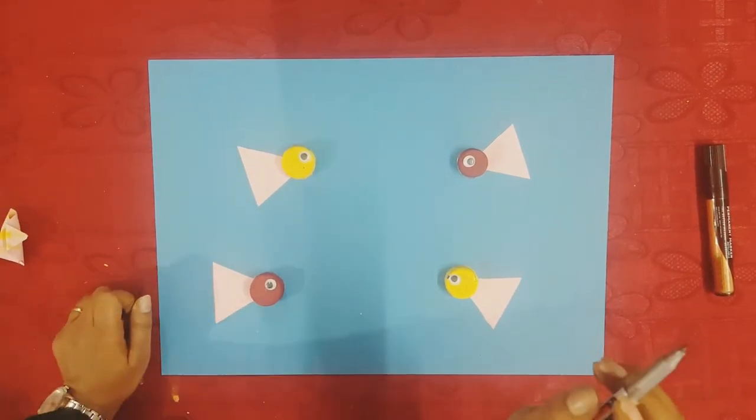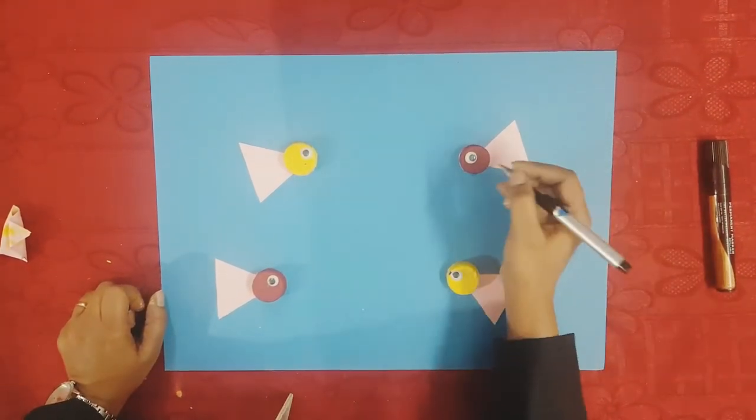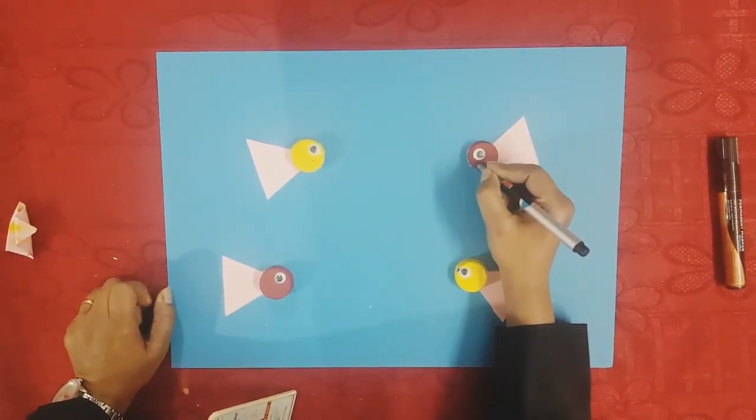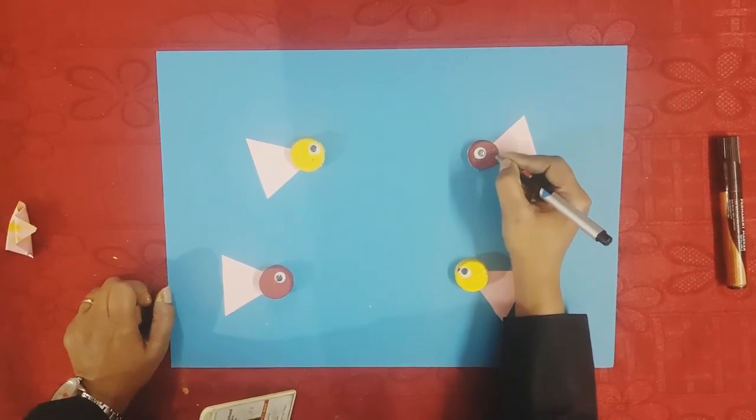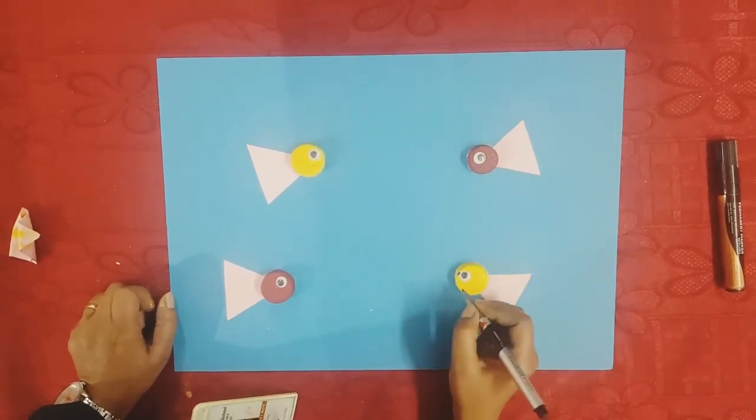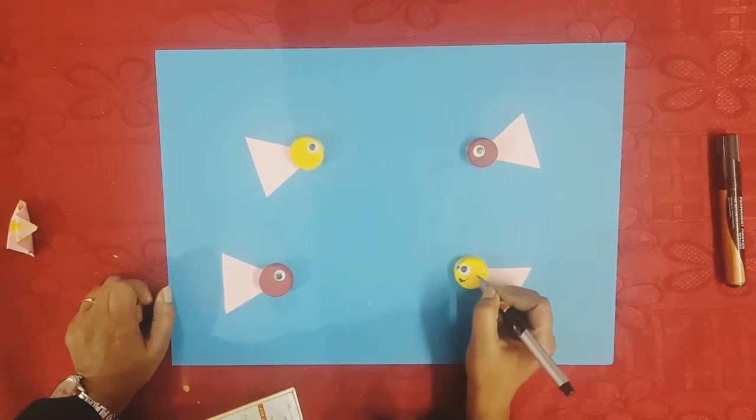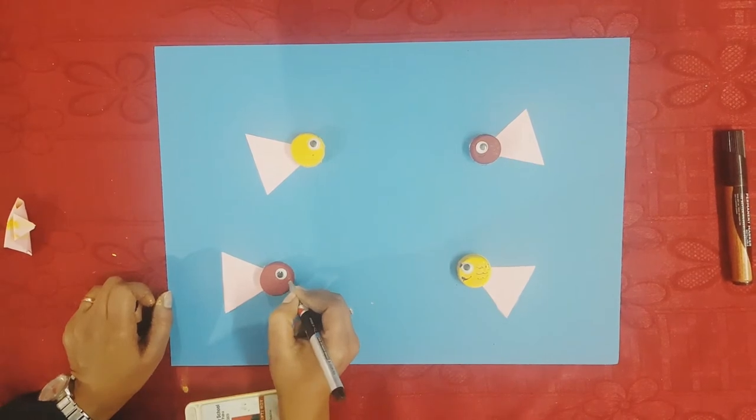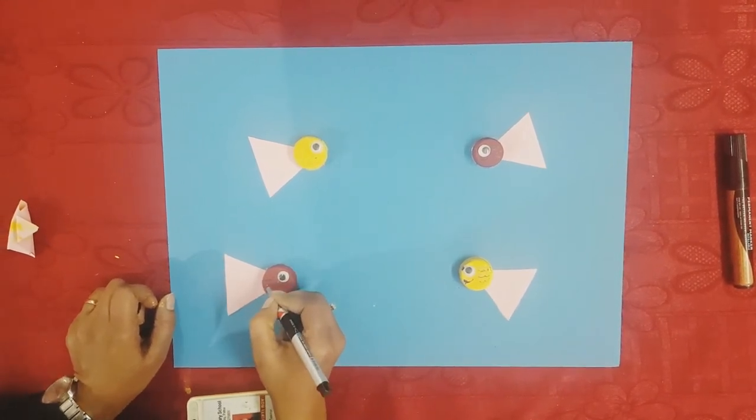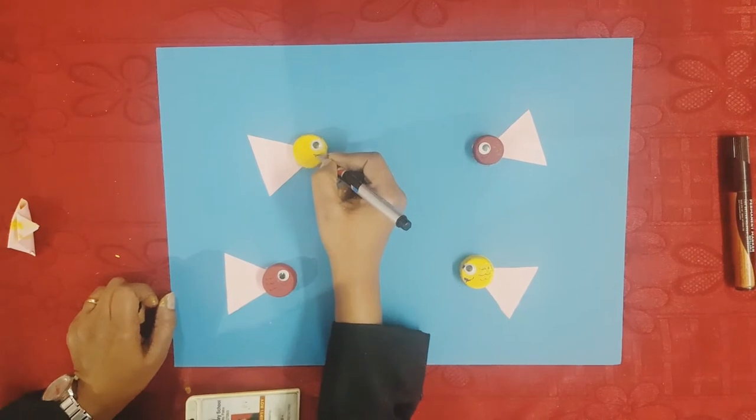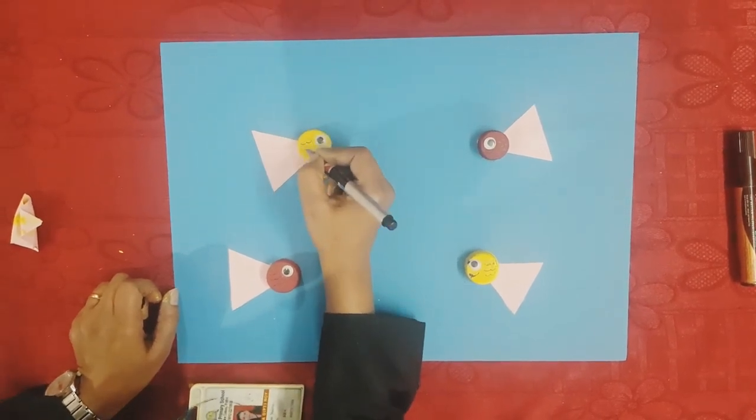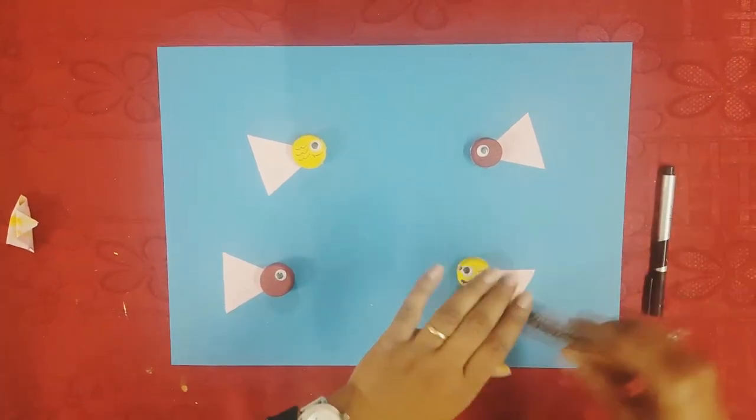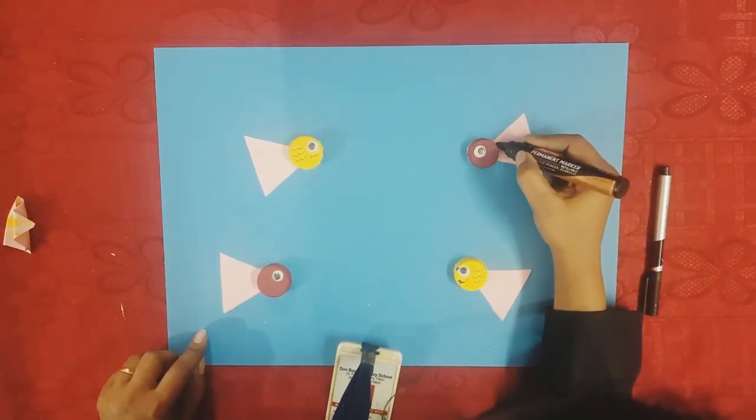Next with the help of the permanent thin marker we are going to make the mouth like this and the scales.